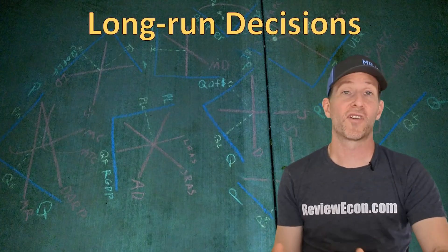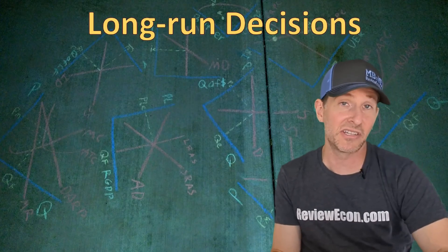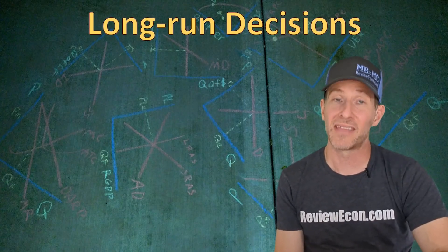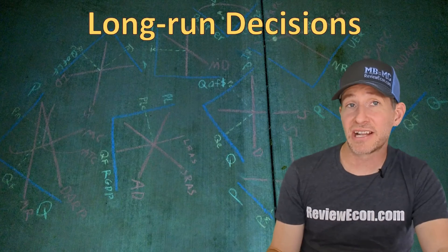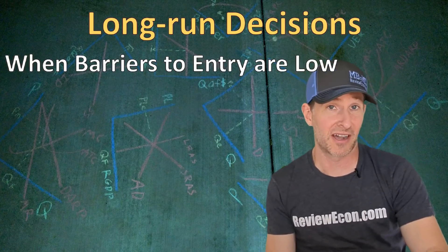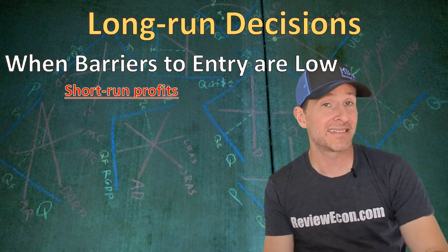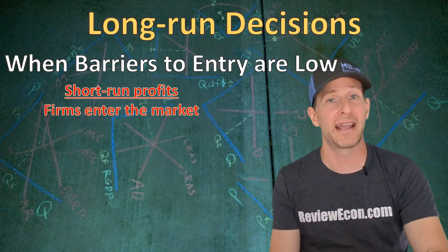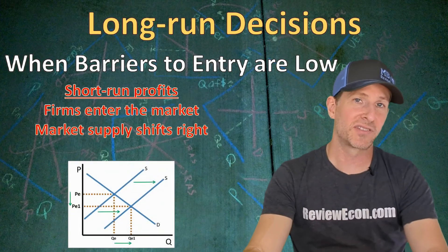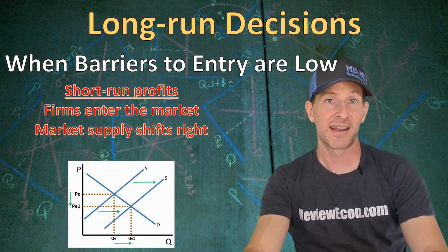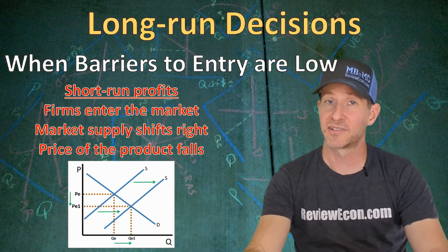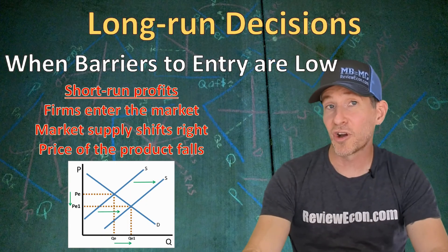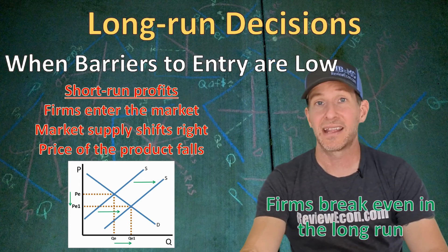Finally, let's talk about long-run decisions for a firm. When firms earn economic losses in the short run, they may continue to operate or temporarily shut down. But if firms are going to earn economic losses in the long run, they will eventually exit the market. When barriers to entry are low — as in perfect competition or monopolistic competition — firms earning short-run profits will attract entrepreneurs who enter the market and produce a competing product. When firms enter the market, the supply curve shifts to the right, the equilibrium price falls, and that eliminates the short-run profits. So low barriers to entry means that firms are going to break even in the long run.